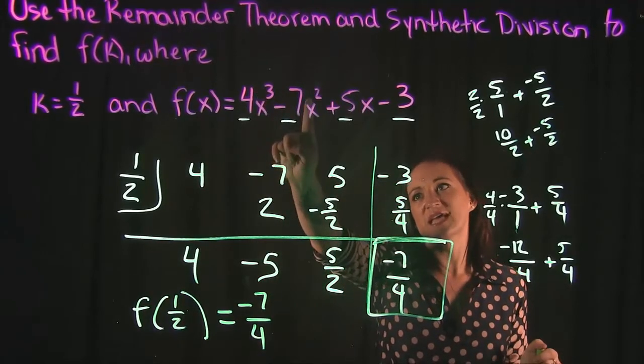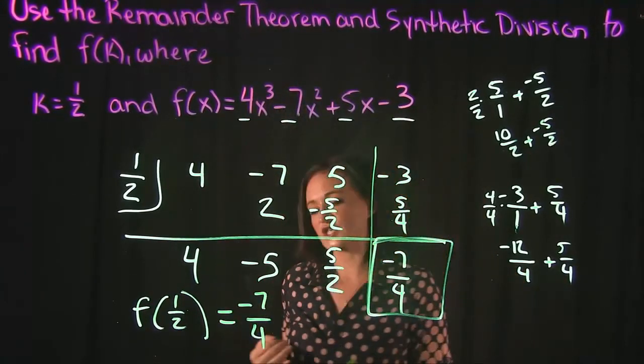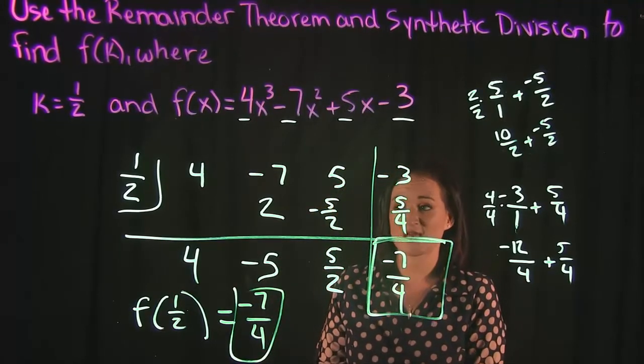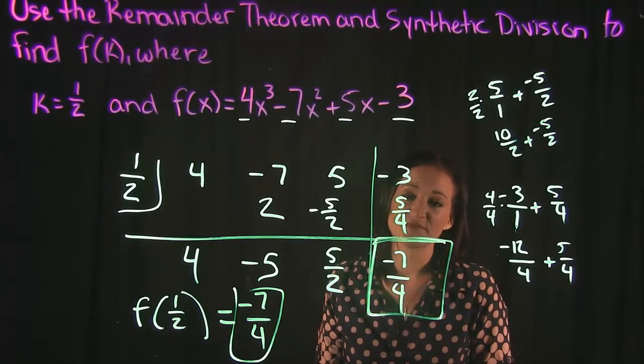If we plugged in 1 half into x and simplified our function, the answer we would get is a negative 7 fourths is what this is telling us. Otherwise, that's it for this video.